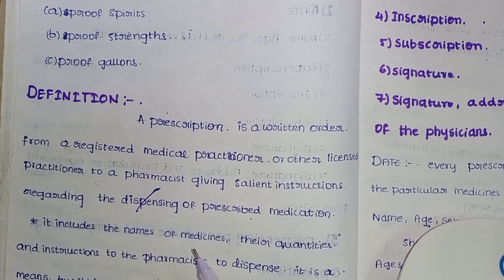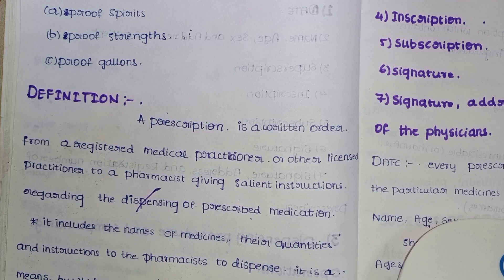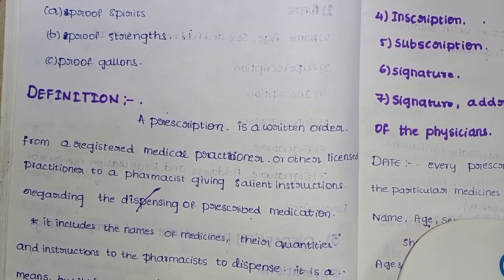Instructions to the pharmacist to dispense — the pharmacist is guided accordingly. It is the means by which a treatment is provided to a particular patient. The prescription means we give the treatment by mentioning the medicines and the quantity. This prescription is also giving the aim of treatment.